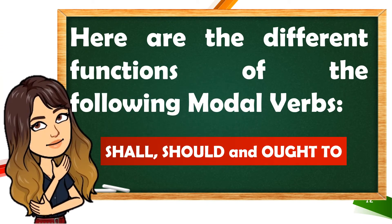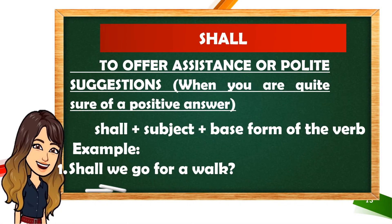Here are the different functions of the following modal verbs: shall, should, and ought to. We use the modal 'shall' if we would like to offer assistance or a polite suggestion, and we use this if we are sure of a positive answer. The format is: shall plus the subject plus the base form of the verb. Example: 'Shall we go for a walk?' Here, you are expecting that the answer will be yes.